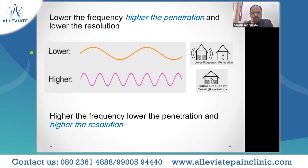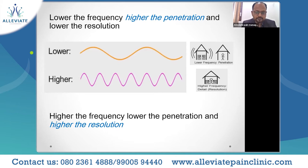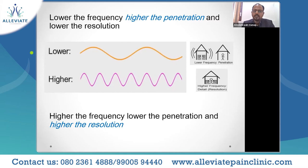Frequency and wavelength are inversely proportional. Lower the frequency, the higher the wavelength, higher the penetration, but lower the resolution. This is very important to remember: when frequency is low, penetration is high but resolution is low. When using a low-frequency probe, penetration is better but the way we see structures is lower in resolution. To scan deeper structures, we have to use lower frequency.